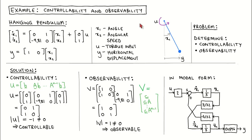For this example, the plant is a frictionless pendulum with a length of 1m and a mass of 1kg. The plant input u is the torque we apply at the pivot point. The measured output y is the horizontal displacement of the tip of the pendulum. We choose the pendulum angle x1 and the angular velocity x2 as the two states. When this nonlinear pendulum model is linearized around an angle of 0 — that is, the pendulum hanging straight down — we get the state variable model shown here on the left.